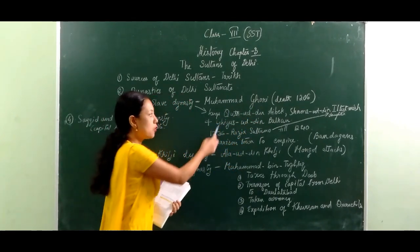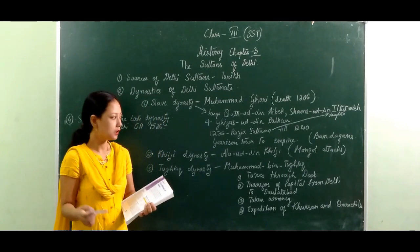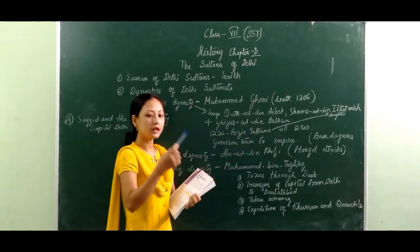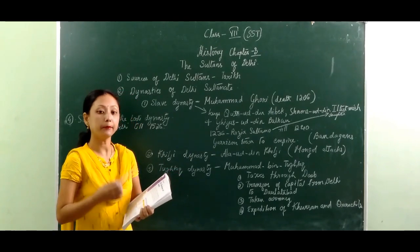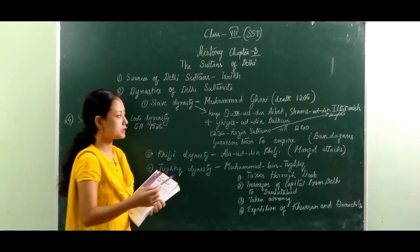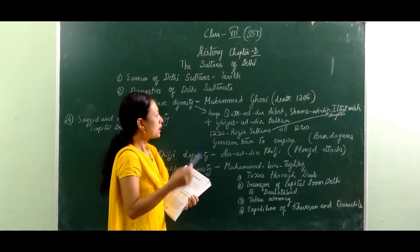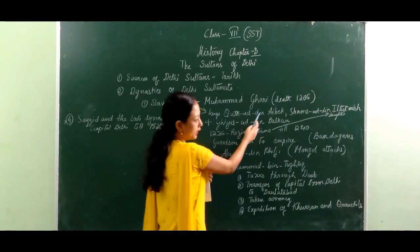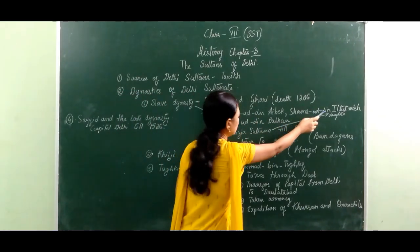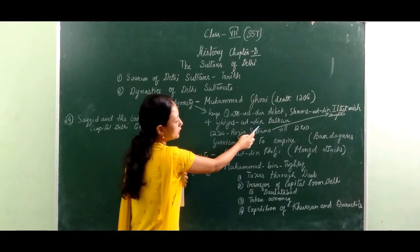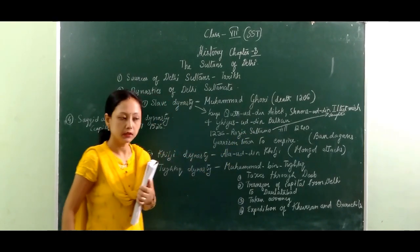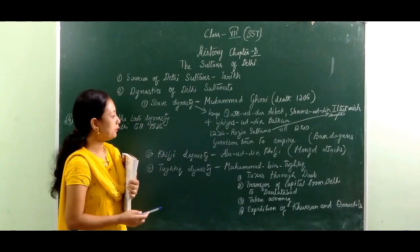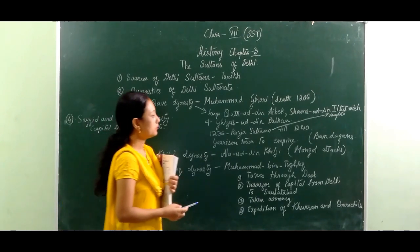As Muhammad Ghori had no son, his slave Qutbuddin Aibak became the king and started ruling. In the Slave Dynasty, we find that Qutbuddin Aibak, Shamsuddin Iltutmish, and Ghiyasuddin Balban were the prominent leaders.